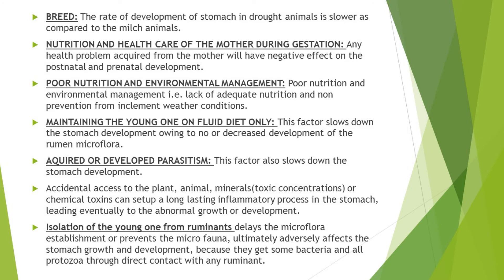Now let's discuss the factors which affect stomach development. First, whether the animal is a draft animal or not — in draft animals there is slower development of the stomach compared to milking animals. The next factor is the nutrition and health care of the mother during the gestation period. If the mother suffers from a severe health problem during gestation, this will negatively affect both prenatal and postnatal development. Poor management and nutrition also causes slower development of the stomach. Additionally, maintaining the young one on a fluid diet only prevents rumen development.